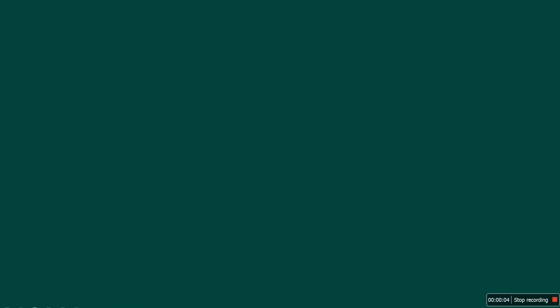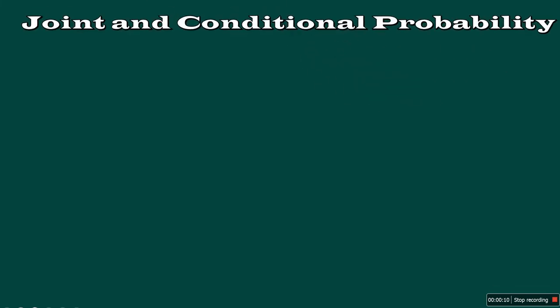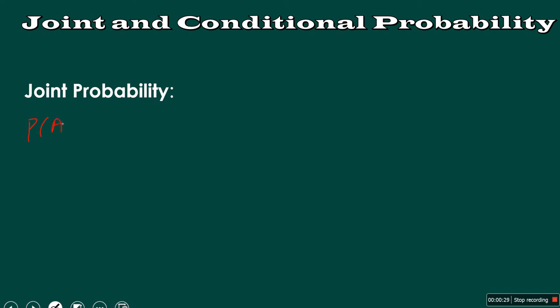Hello everybody. Today we will speak about joint and conditional probability. Let's get started. Joint probability — what does it mean? It is the probability taken for A intersect B.